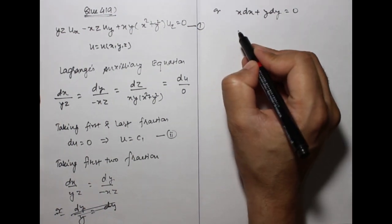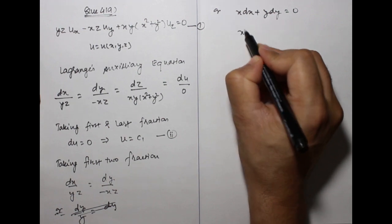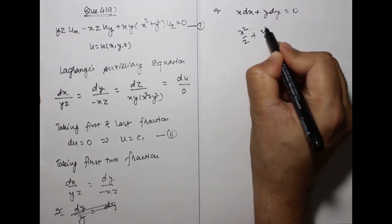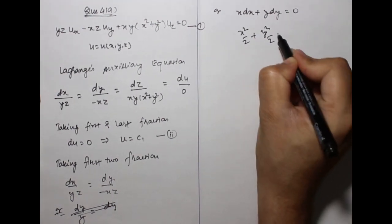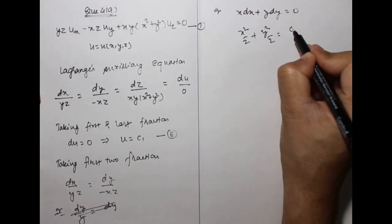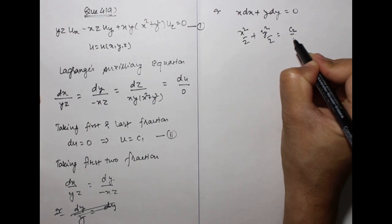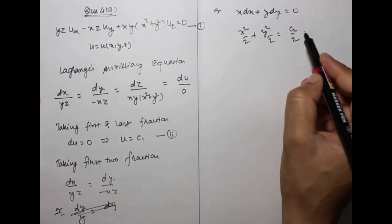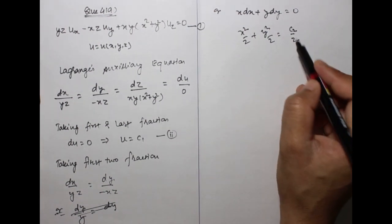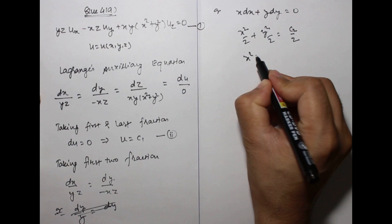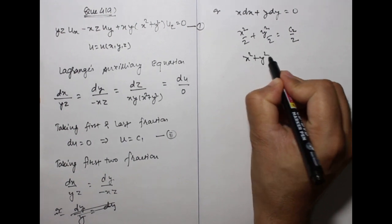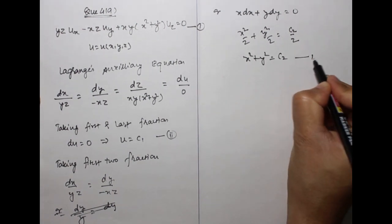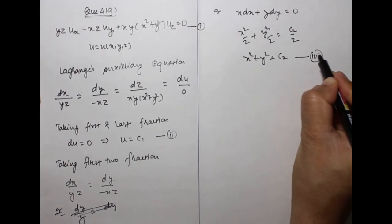Integrating: x²/2 + y²/2 = c2/2, so x² + y² = c2. This is equation 3.